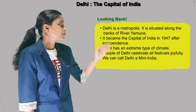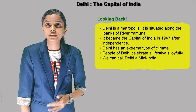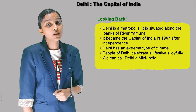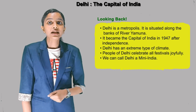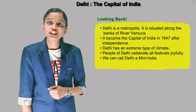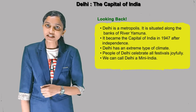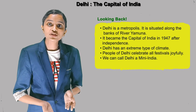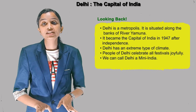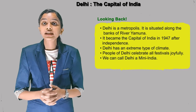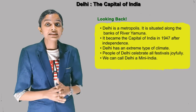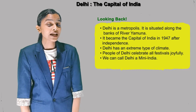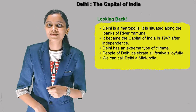Looking Back: Delhi is a metropolis situated along the banks of river Yamuna. It became the capital of India in 1947 after independence. Delhi has an extreme type of climate. People of Delhi celebrate all festivals joyfully. We can call Delhi a mini India. Thank you students, we'll meet in the next class. Goodbye!